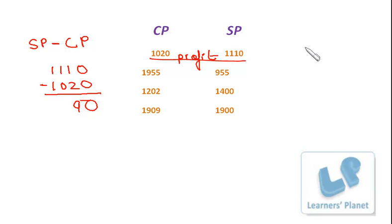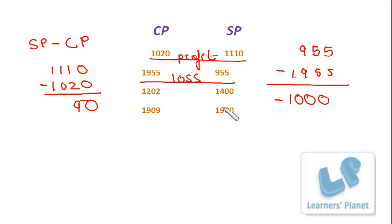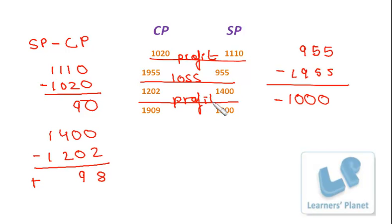Now, in the second one, we have 955 minus 1955. Over here, it's negative 1000. So, this case will be loss. Now, next we have is 1400 minus 1202. And that equals to positive 198. So, this case we have profit.